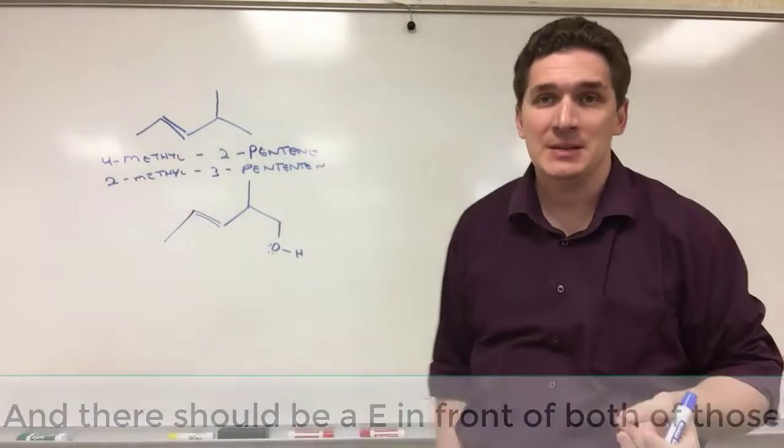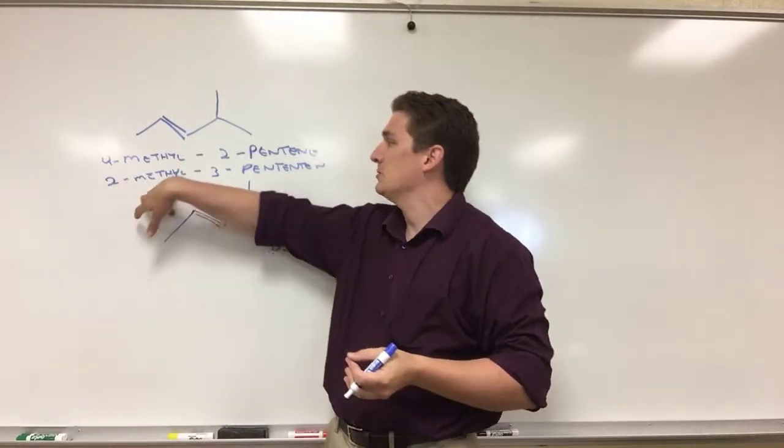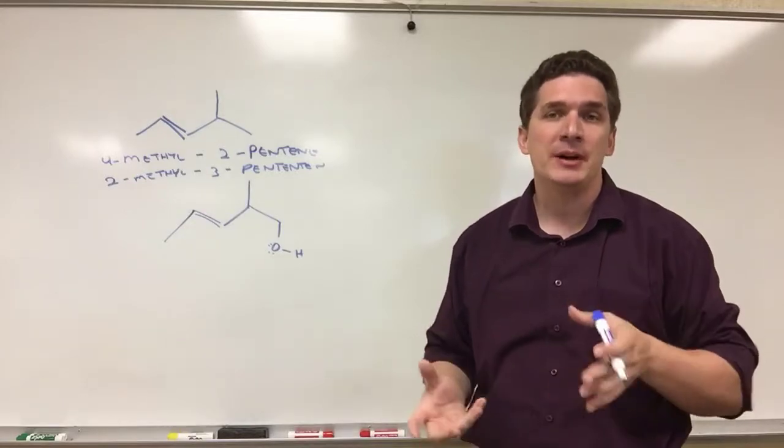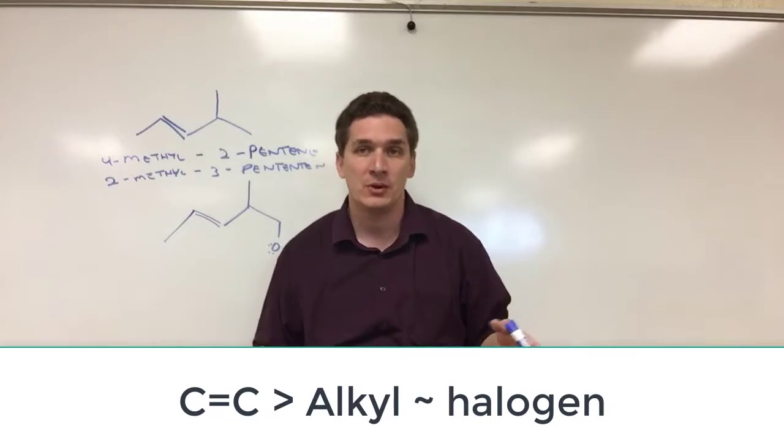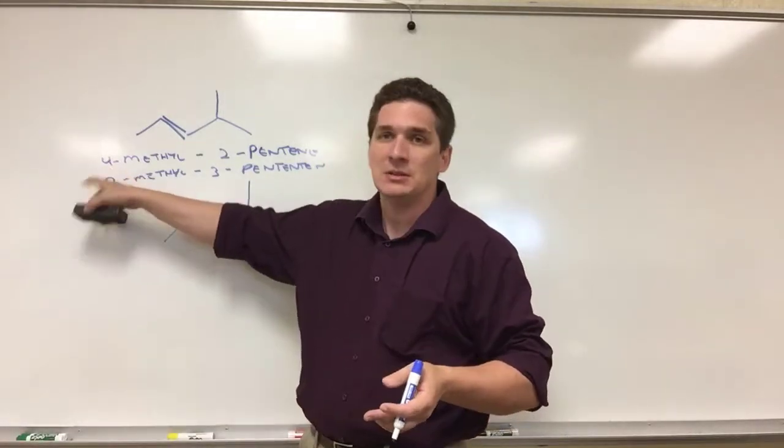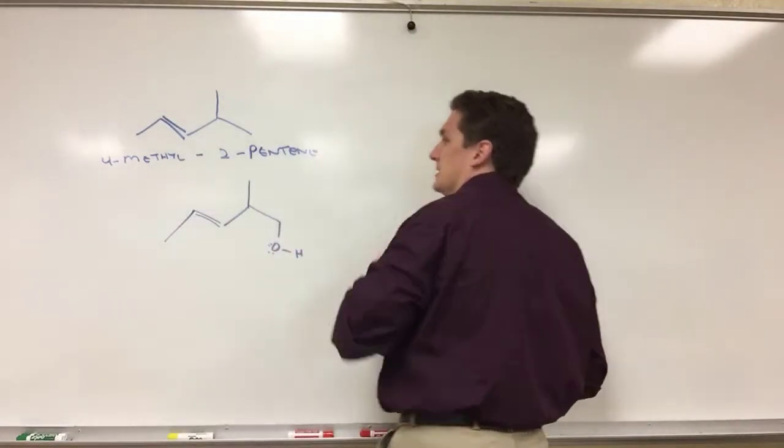So your intuition may be to sit back and say, well we need to minimize the first position so it needs to be 2-methyl-3-pentene or 4-methyl-2-pentene. Actually, the double bond is going to take priority over any halogens and any methyl group or any alkane branching chains. So even though your intuition may be to say, well this is what we did for alkanes, actually what you're going to want to do is name it this.